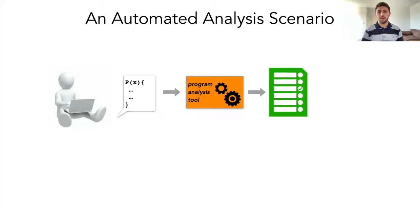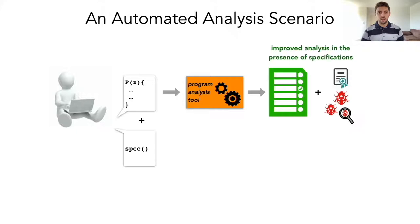To start, let me describe a typical automated analysis scenario. Usually when we want to analyze our programs, we use some program analysis tool that provides us with feedback on the behavior of our programs. When we incorporate a specification of the intended behavior, the analysis can be considerably improved, allowing us to catch more bugs or have better guarantees.